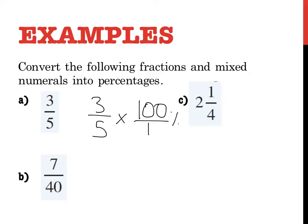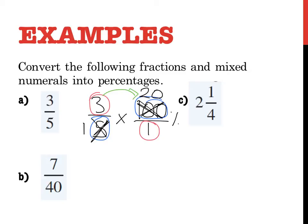Before I begin, I'm going to teach you a quick trick. You know how we spend heaps of time at the end simplifying? With fractions when you're multiplying, you can do cross-simplifying. You look at diagonal numbers and see if you can simplify them before you multiply. 3 and 1 — can't simplify those. But I've got 5 and 100: 5 goes into 5 once and 5 goes into 100 twenty times. So I simplify before I begin. Then numerator times numerator: 3 times 20 is 60. 1 times 1 is 1. So it's 60 over 1%, which means 3 fifths as a percentage is 60%.